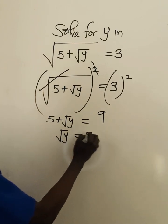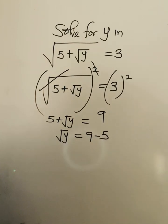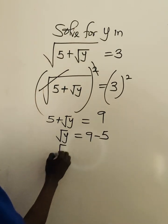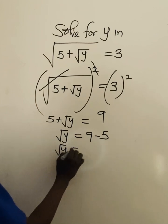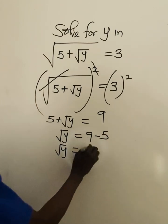So we have root y equal to 9 minus 5, which will give 4.